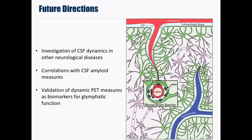It is not yet clear whether our findings are specific to Alzheimer's and multiple sclerosis, and future work will be done to investigate CSF dynamics in other neurological diseases. Additional analysis will also be performed to look at correlations between PET and CSF amyloid measures. We have shown, using a broad measure of extracellular clearance, that dynamic PET can be used to measure changes in CSF dynamics. Given the close link between CSF flow and the glymphatic system, future work will focus on validating whether these PET measures can be used as biomarkers of glymphatic function.